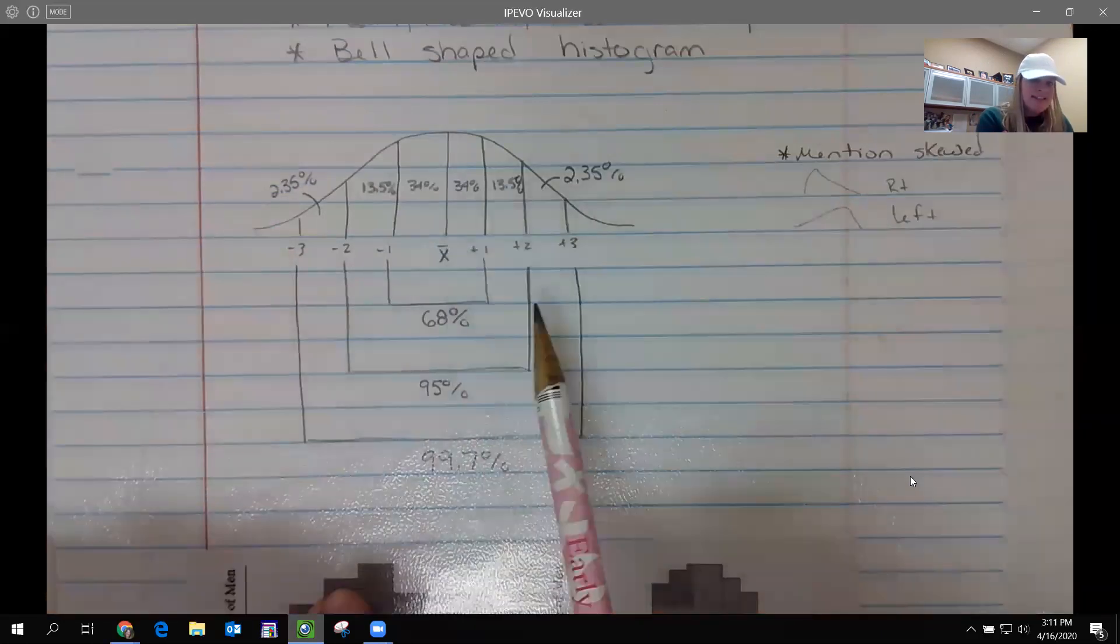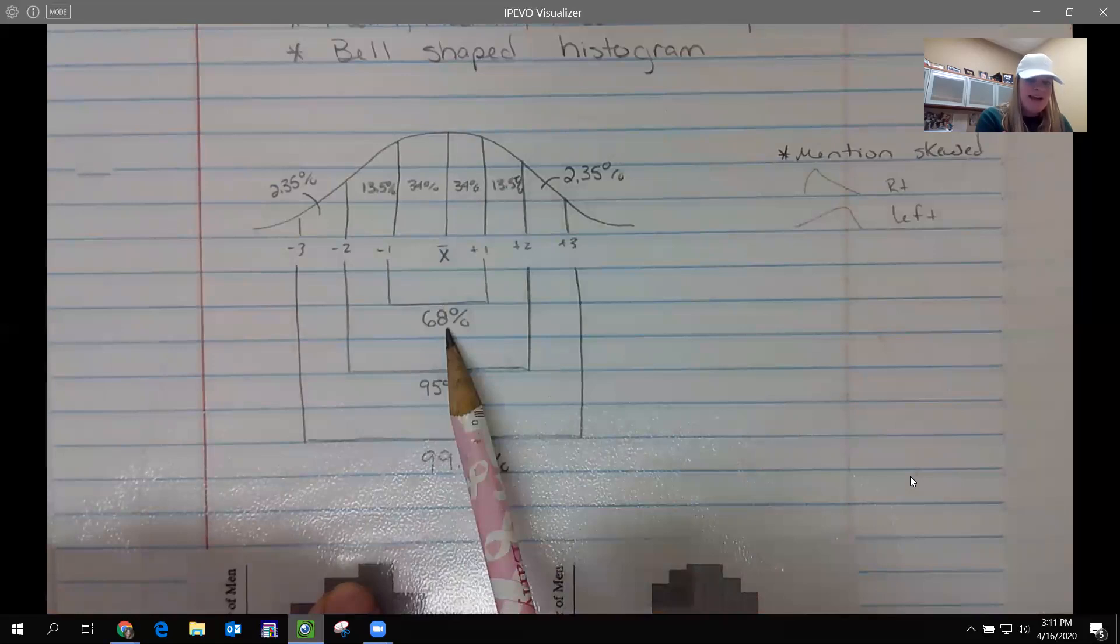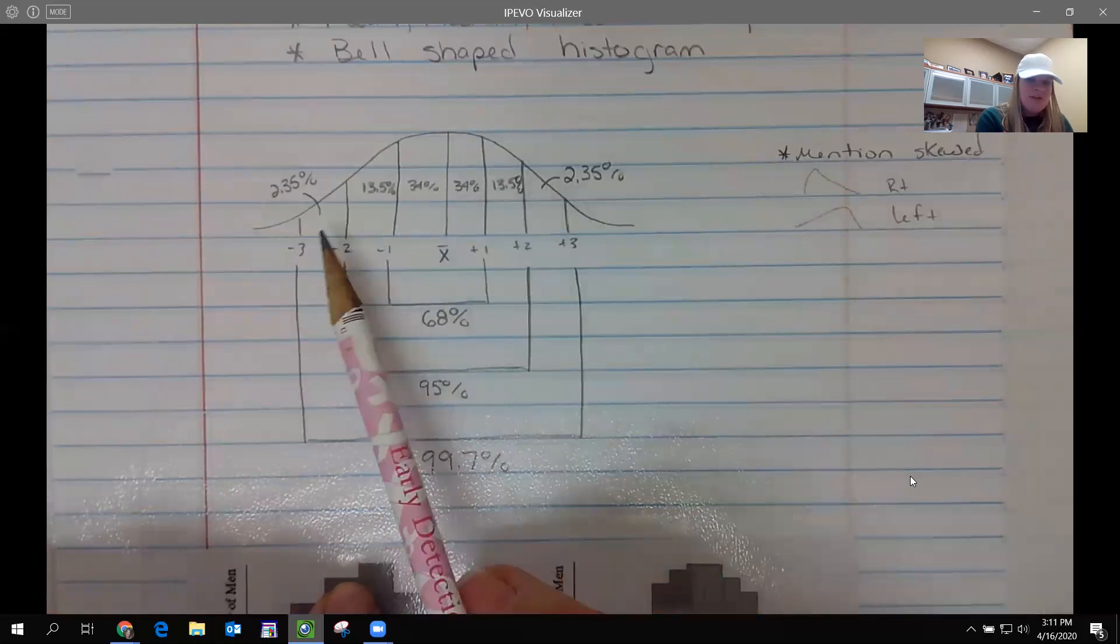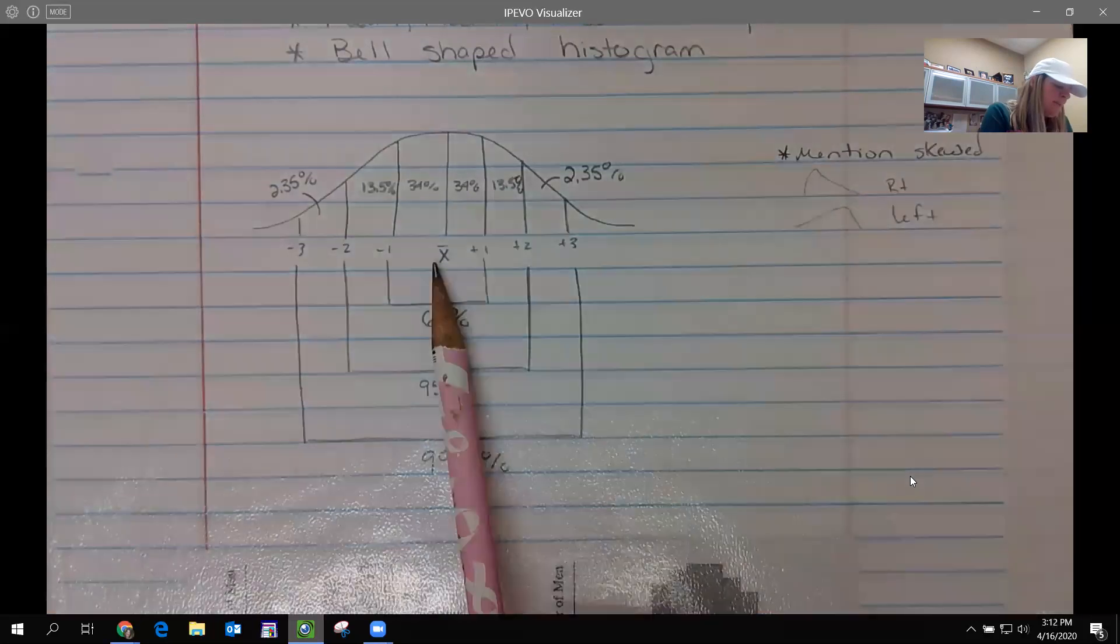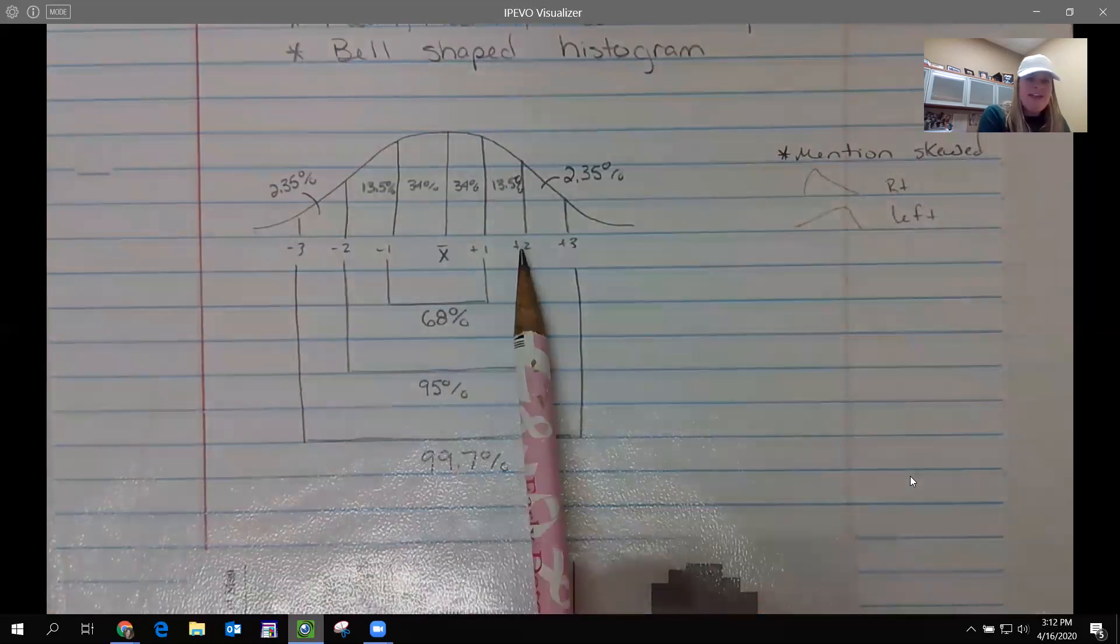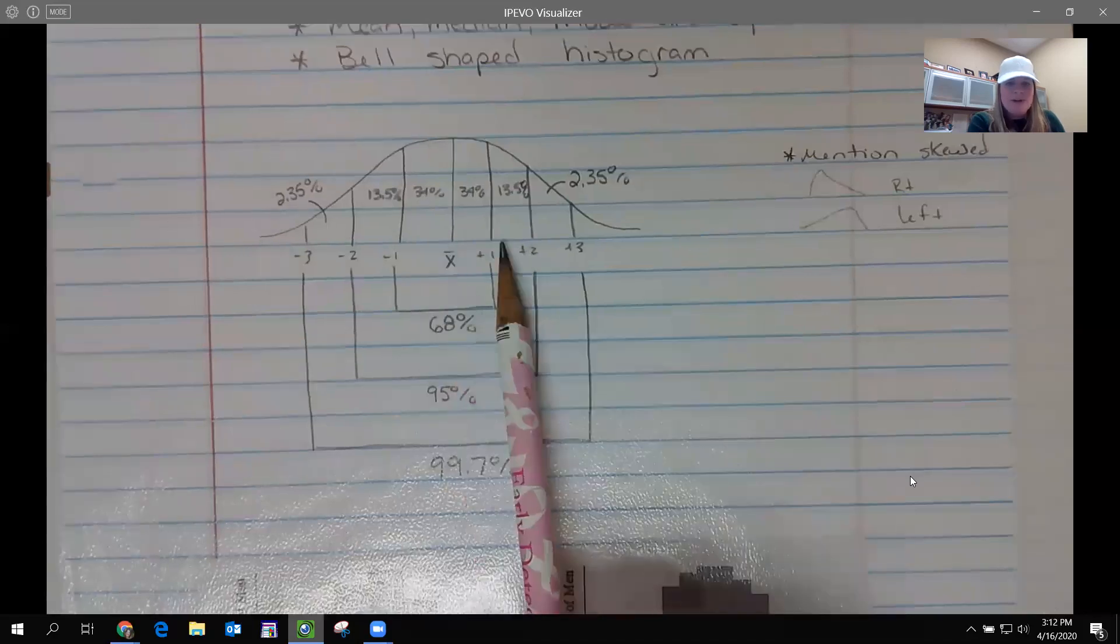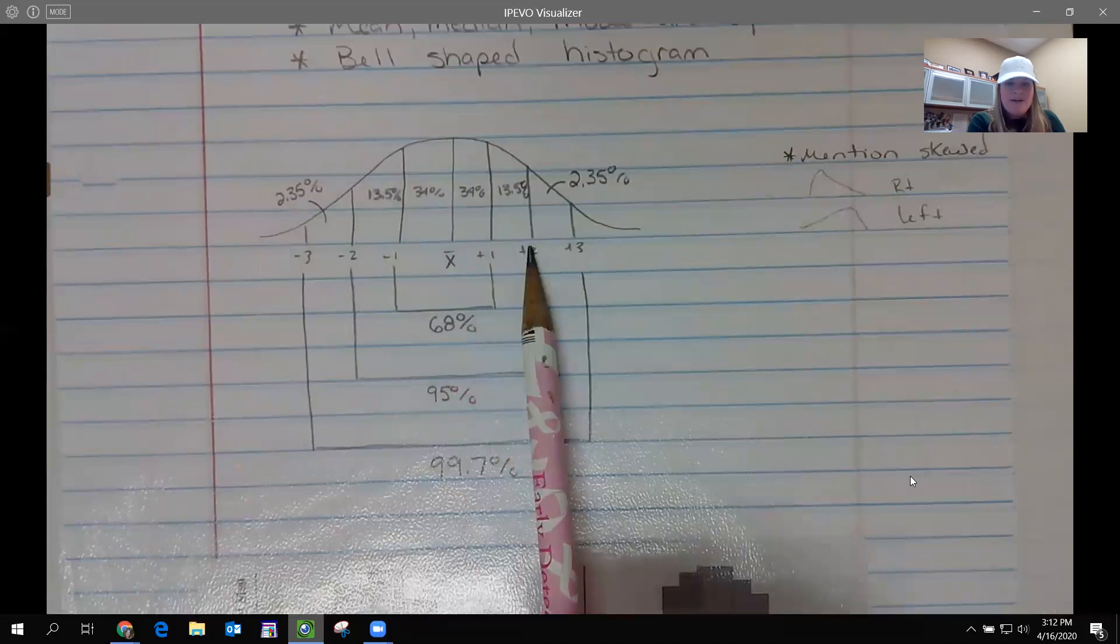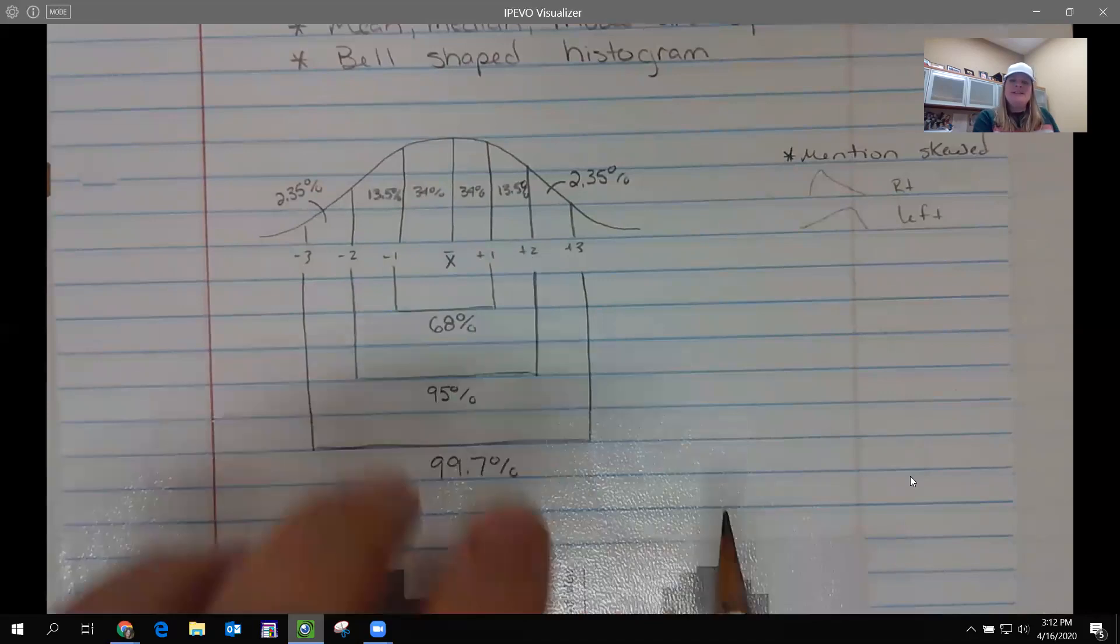With our bell shaped, you have the mean down the middle. There's my mean symbol. When I go plus one, minus one, that is referring to the Z-scores or the standard deviation. Look what happens when I add one standard deviation in both directions from the mean. I have picked up 68% of the people in my sample. If I go out two standard deviations, I have now picked up 95% of the people. If I've gone out three standard deviations, I have now picked up 99.7% of the people.